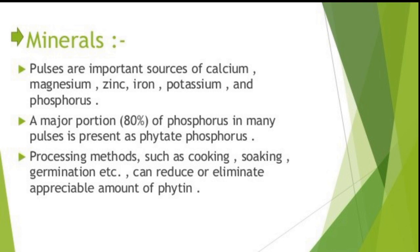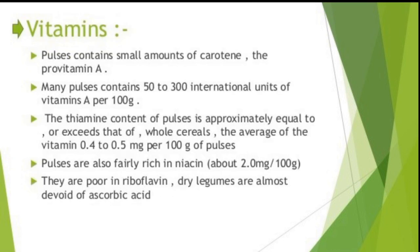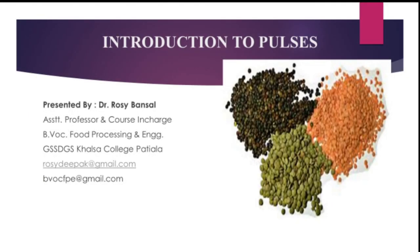Legume seeds are an excellent source of B complex vitamins, particularly thiamine, folic acid and pantothenic acid. Like cereals, they do not contain vitamin A or vitamin C, although germinated pulses can have some vitamin C. Pulses are fairly rich in niacin at about 2 mg per 100 g, but are poor in riboflavin, and dry legumes are almost devoid of ascorbic acid.